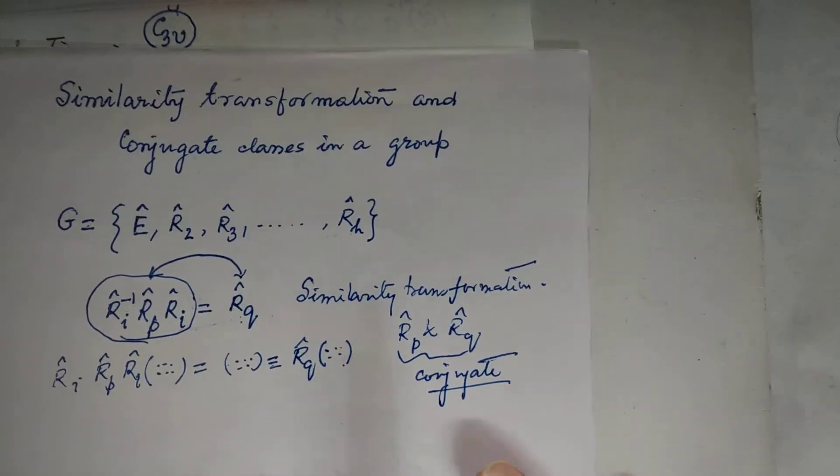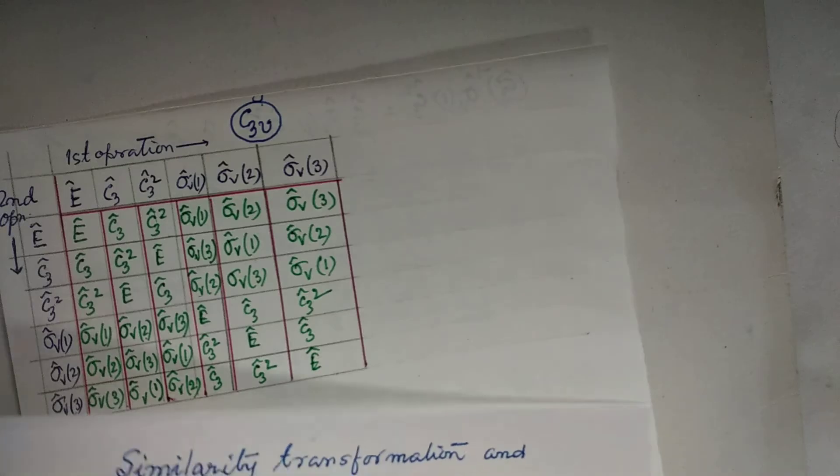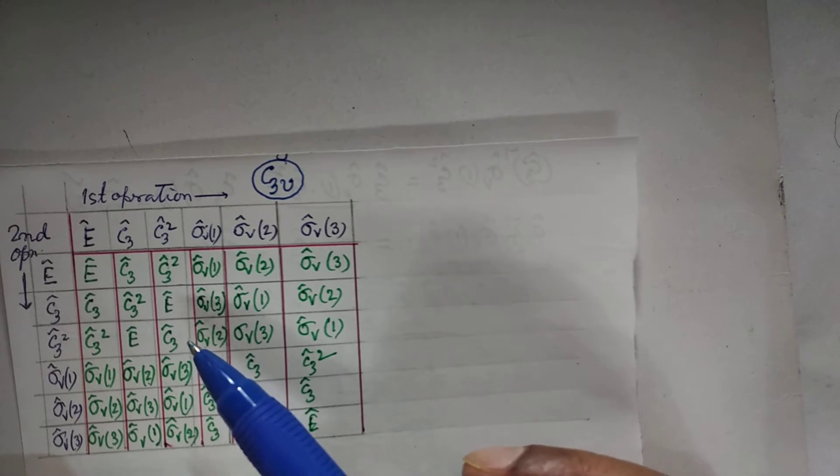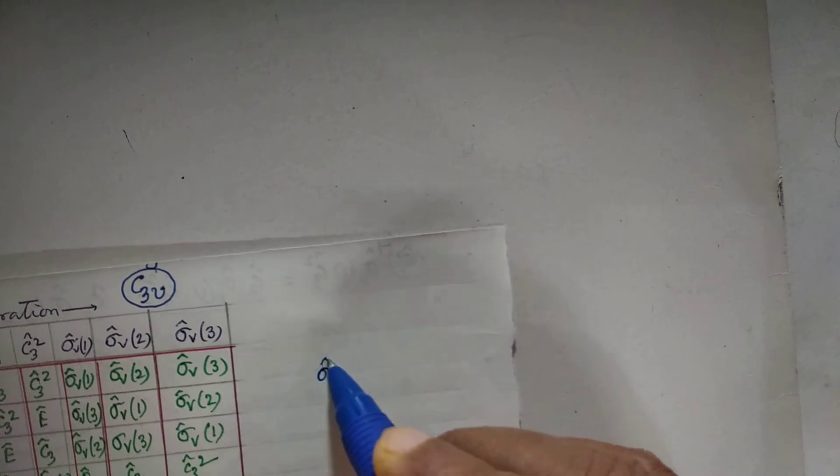Let us now consider actual examples. Let us consider the symmetry multiplication table of C3V. I explained the construction of this C3V table in one of my earlier videos with chloroform molecule as example. You may take chloroform, ammonia, or any molecule which belongs to this C3V point group and you will get this symmetry multiplication table. These are the first operations, these are the second operations, and the green part is the result of the symmetry multiplication. Now consider any operation, say sigma V1.